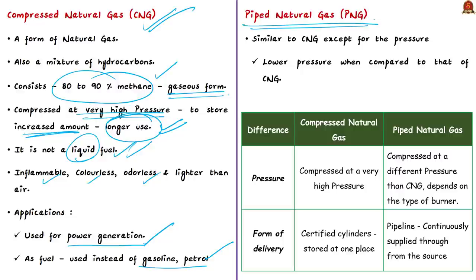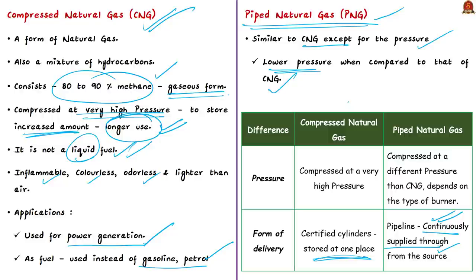PNG or Piped Natural Gas is similar to CNG except it is compressed at a lower pressure. Another key difference is in how they are delivered — CNG comes out of natural gas bottles, while PNG is supplied through pipelines for household needs. Unlike CNG, which is stored at a single place, PNG is continuously supplied through pipelines from the source to the destination, providing uninterrupted supply of heat for cooking. The pressure of PNG depends on the type of burner the customer uses. Both CNG and PNG are refined natural gas with methane as their primary constituent.